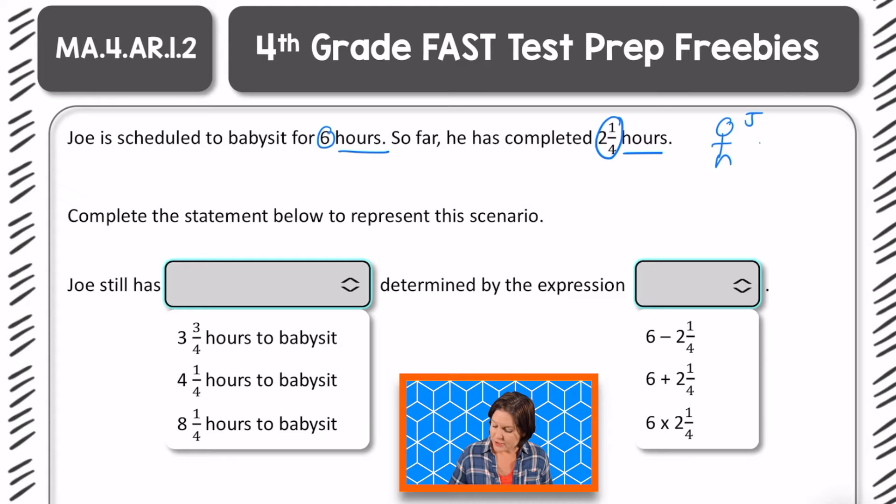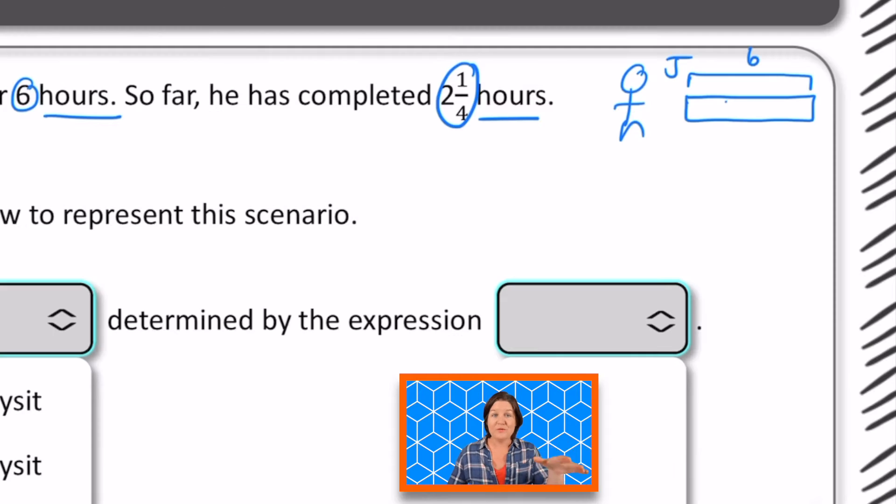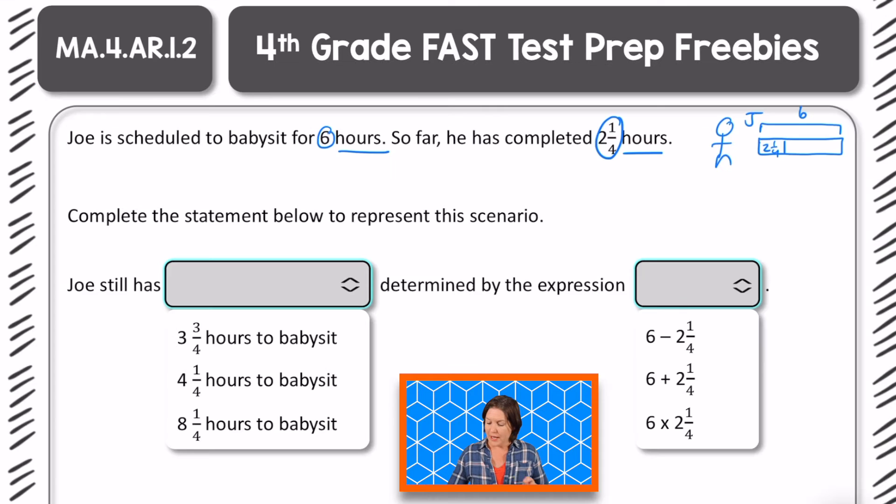So the way that I'm imagining this is like this: So far he is scheduled to complete six hours and he has completed two and a quarter so far. My guess would be that we are trying to figure out what that other chunk would be.